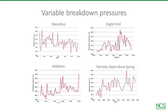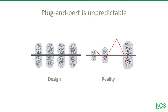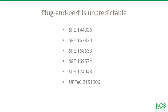You can't control the number of fractures created, where the fracks are located along the lateral, or how much proppant is pumped into each frack. Here's why: formation breakdown pressures vary widely across the lateral, even between adjacent clusters. These actual breakdown pressures were recorded in four leading basins. The variation makes it impossible for all clusters in a stage to fracture at the same time and take the same amount of proppant.